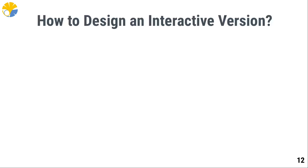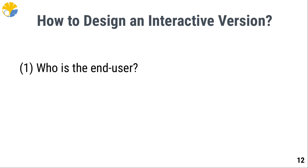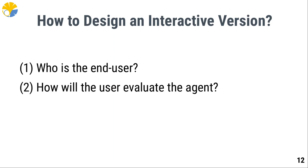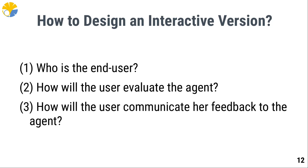How can we design an interactive version of this paper, for example? First, we need to think about who the end user is — is she a game developer or a non-expert? Second, how will the user evaluate the results? In our example, it would be the quality of the game levels. Third, how will the user communicate her feedback to the agent and therefore to the underlying RL algorithm?